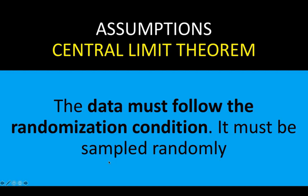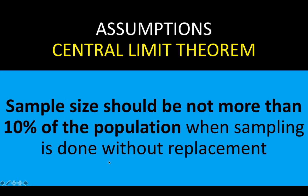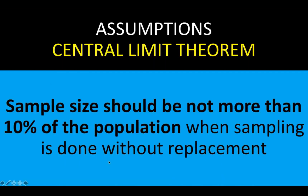So what do we learn from our simulation? In order for the Central Limit Theorem to work, here are the assumptions. Number one, the data must follow the randomization condition — the samples must be taken randomly. The second assumption is that samples should be independent of each other and should not influence other samples. To ensure this, sample with replacement. If sampling without replacement, the sample size should not be more than 10% of the population, because taking 10% will significantly change the remaining 90% and independence can no longer be warranted.